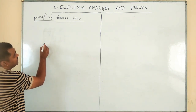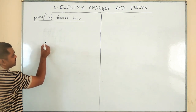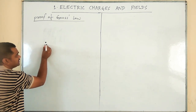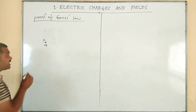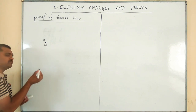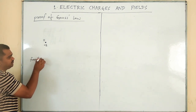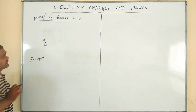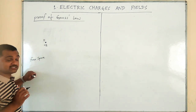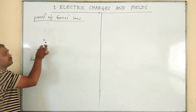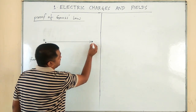For the proof, I will consider a point charge plus Q at some point in free space — in vacuum. The concept of electric intensity says that the direction of electric field due to a positive point charge is outwards.